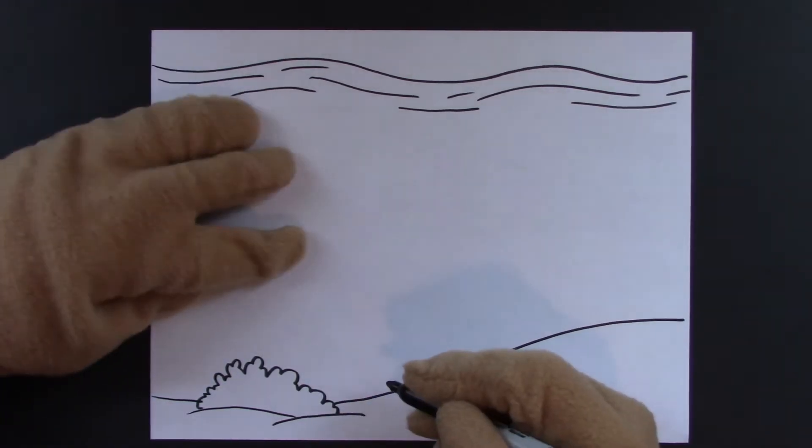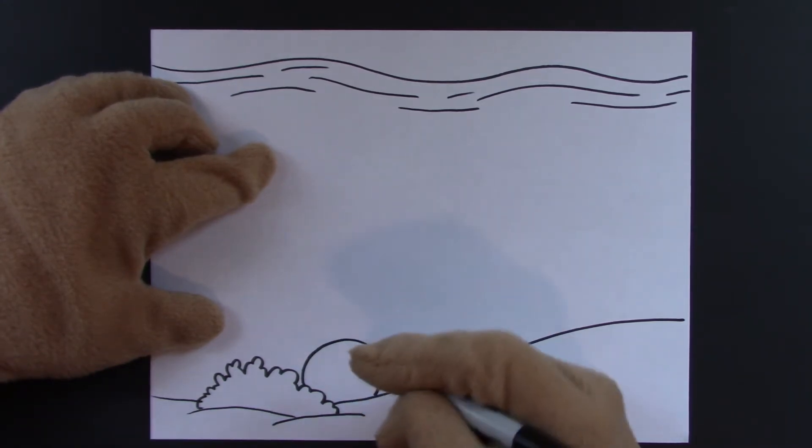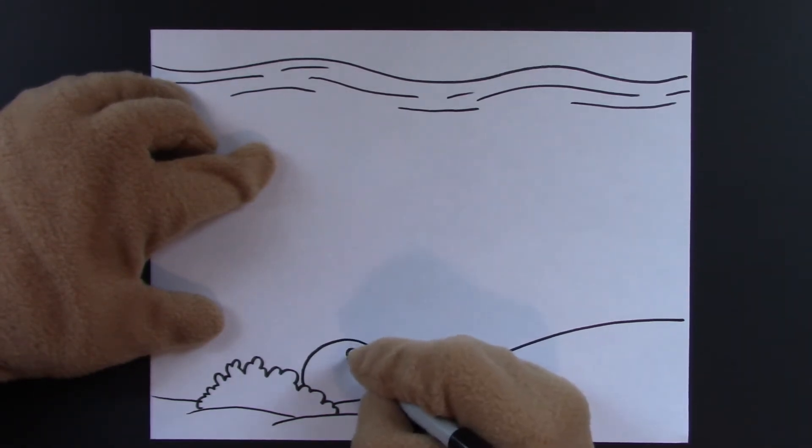Next, we'll draw a brain coral right in the middle. It's very eye-catching. Then we'll fill it with S's and J's, little squiggles.